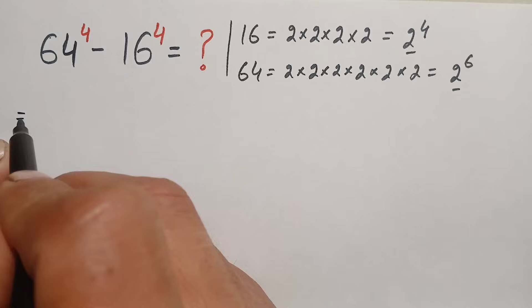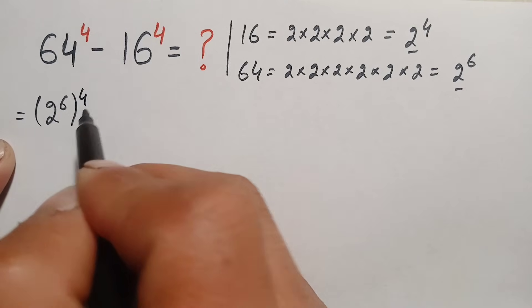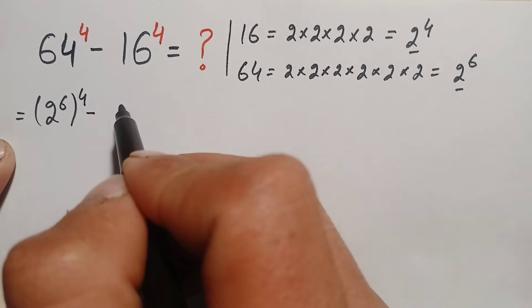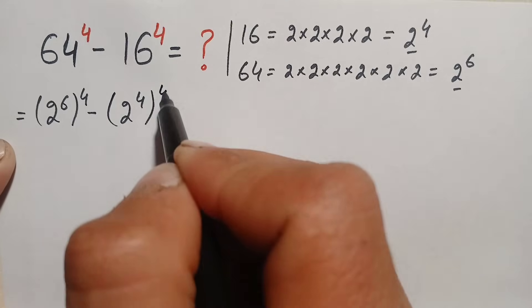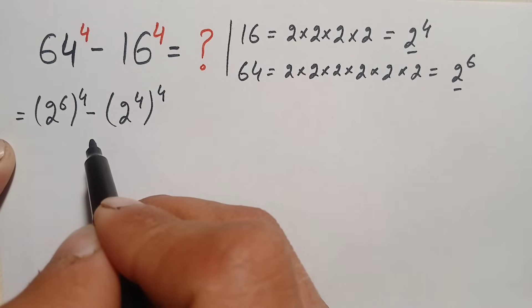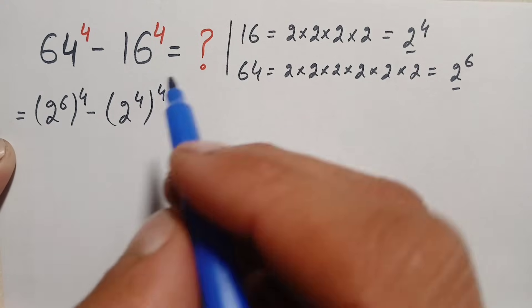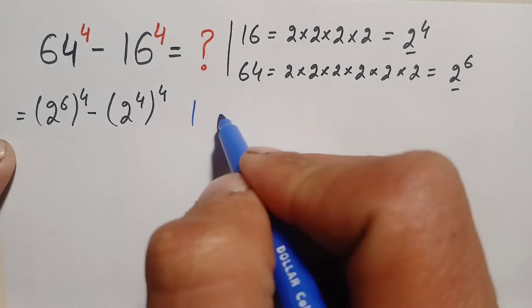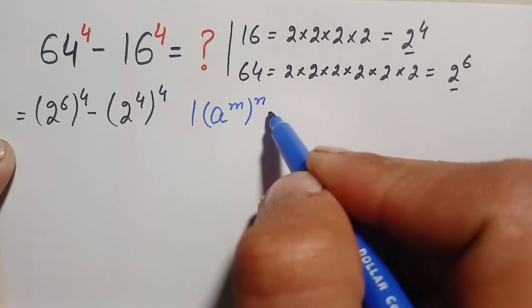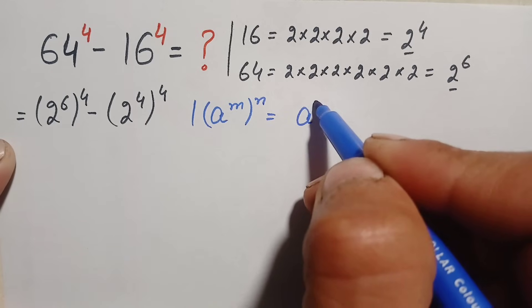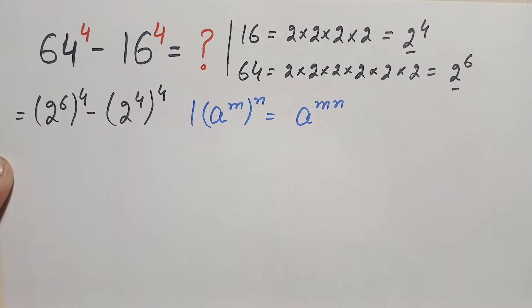This becomes 64, which is 2 raised to power 6, whole raised to power 4, minus 16, which is 2 raised to power 4, whole raised to power 4. In these two terms we will use the exponential identity: a raised to power m, whole raised to power n, equals a raised to power m times n — we multiply the powers with each other.